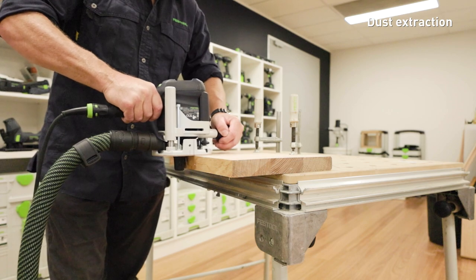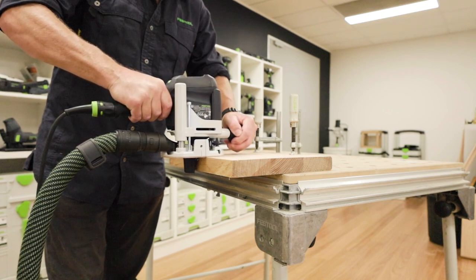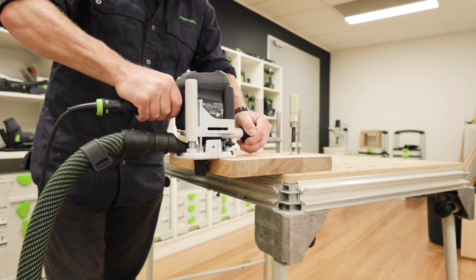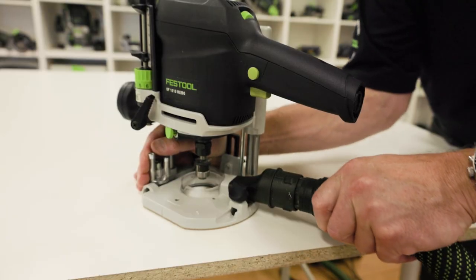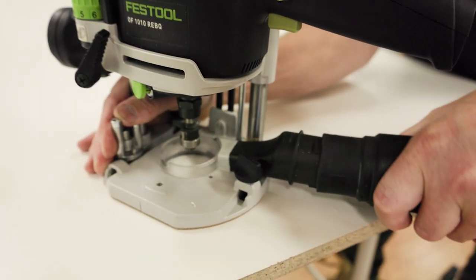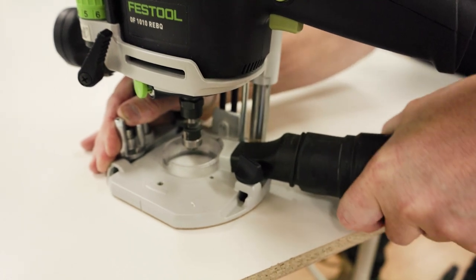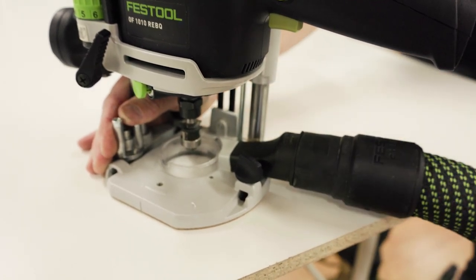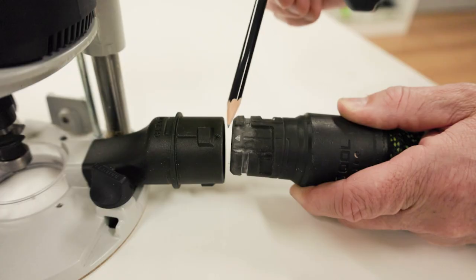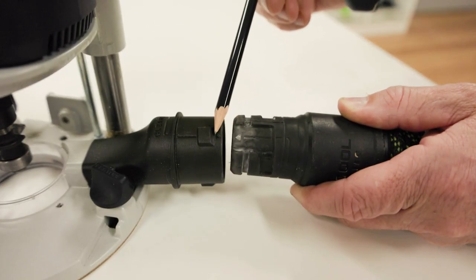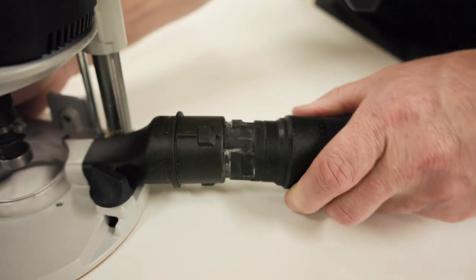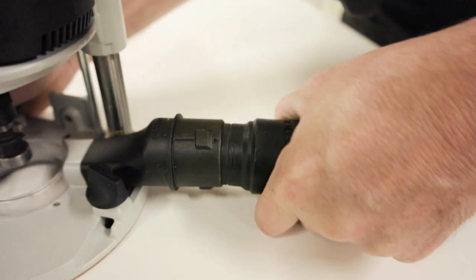The IF-1010R can be connected to a dust extractor to remove harmful dust when working and will accept a 27 or 36mm hose. The hoses have a bayonet fitting that locks the hose in firmly when in use. When fitting the hose, line up the hose with the arrow indicators and turn clockwise to fix in place.